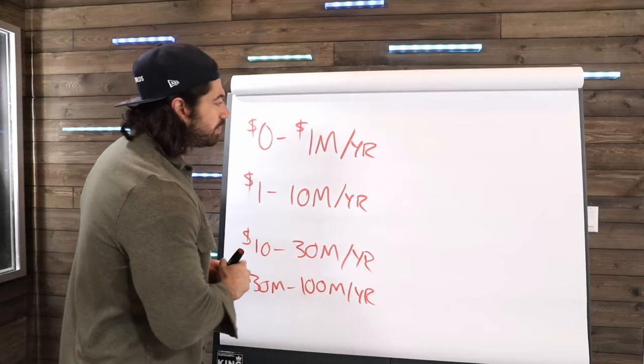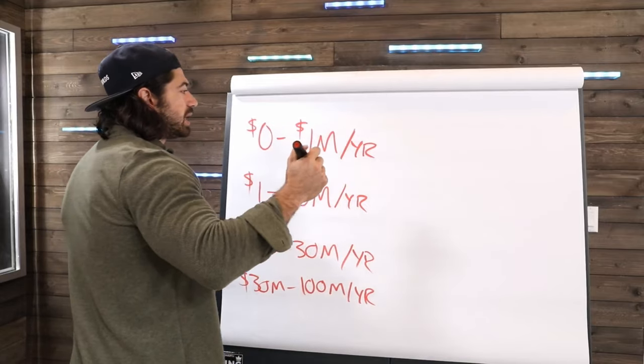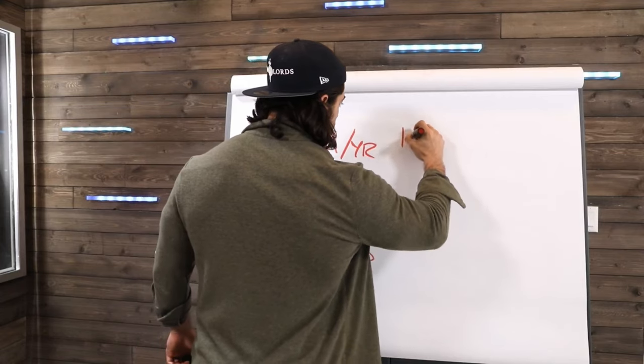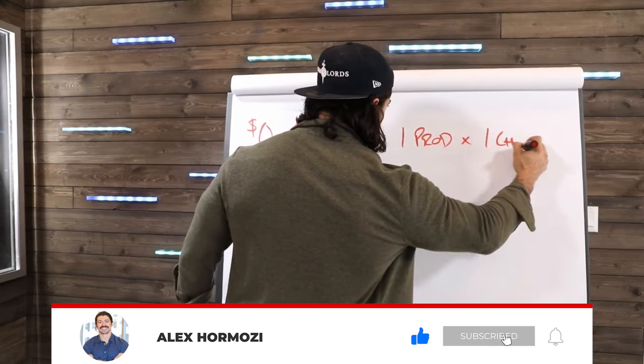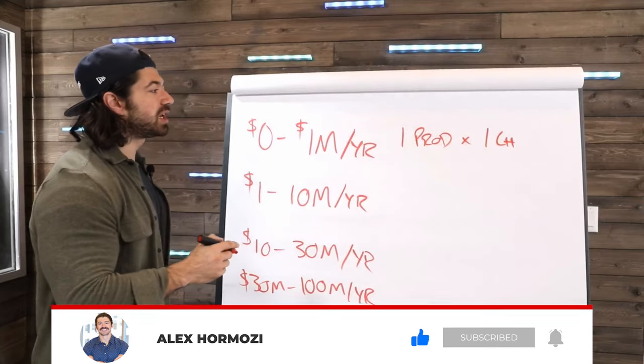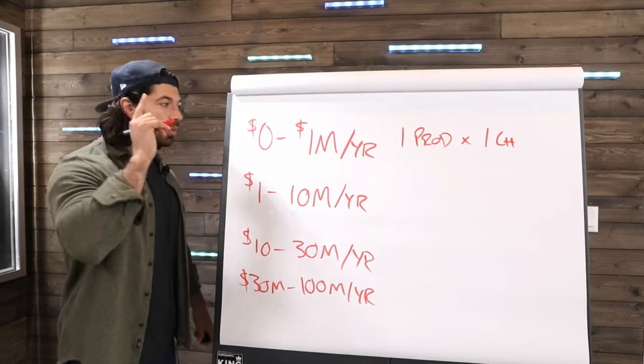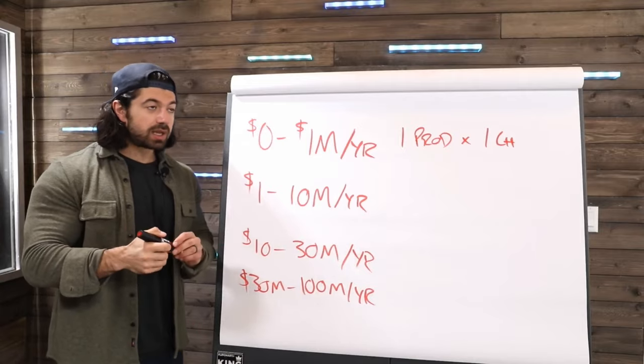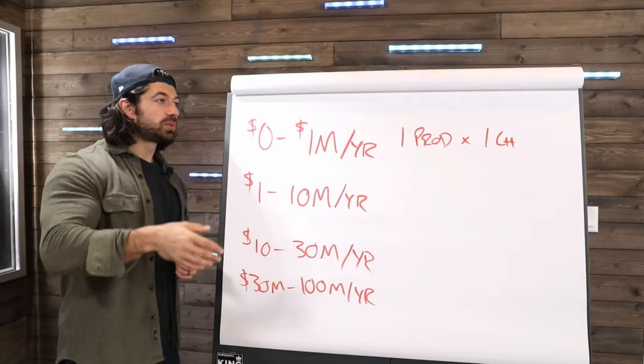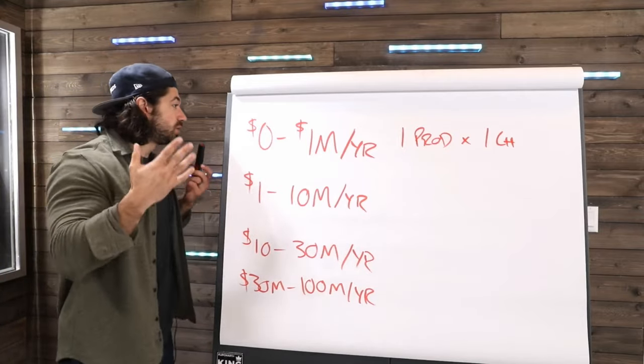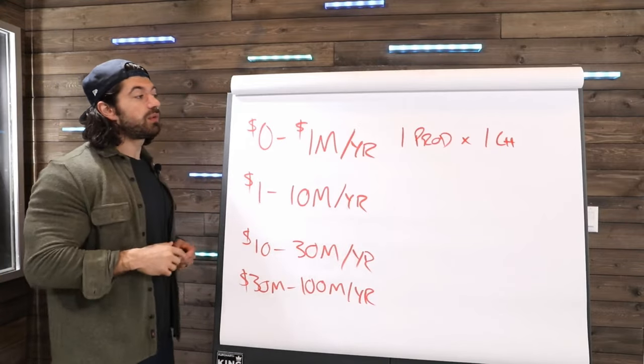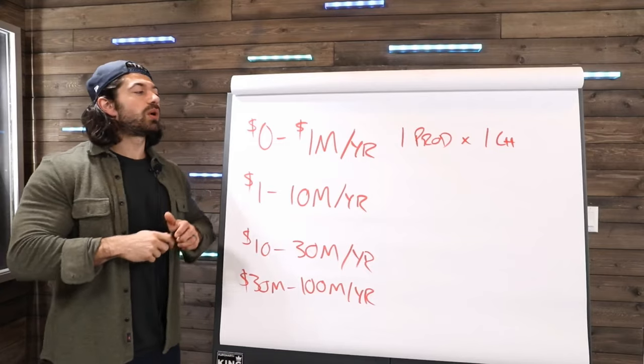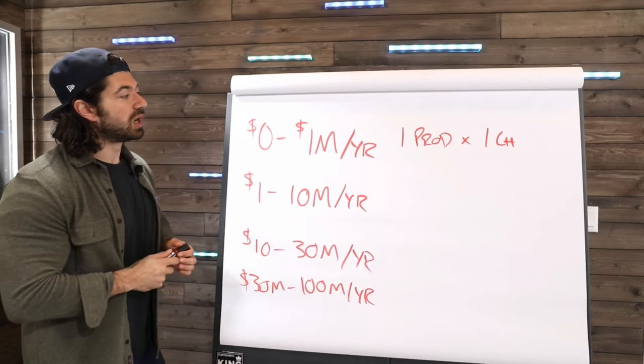That being said, zero to a million, really simple. It's just one product on one channel. That means you learn how to figure out how to sell one thing on one channel. A channel would be like cold email, Facebook ads, Instagram ads, YouTube ads, referral partners. All organic, earned media. So all of these are different channels that you can use to acquire customers.